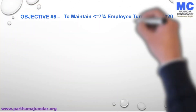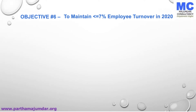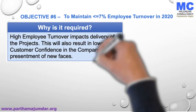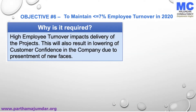The objective we want to set is to maintain less than or equal to seven percent employee turnover in 2020. In case someone is not aware, employee turnover means employees leaving the company. So we want less than or equal to seven percent of employees leaving the company in the year 2020.